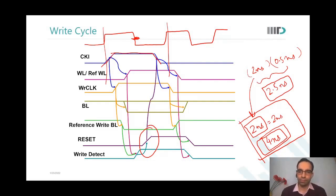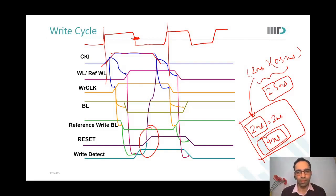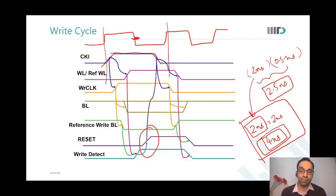A student asks: will the high period always be 2 nanoseconds, or does it depend on the reset? The instructor clarifies: the reset and self-timing come only after write detect has come. Write detect depends on the writing speed of the memory cell. So all this is actually driven by the speed of the memory cell.